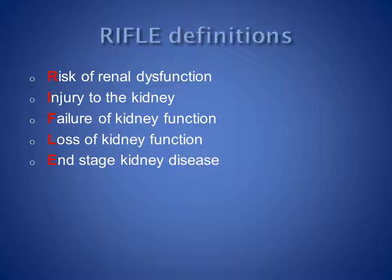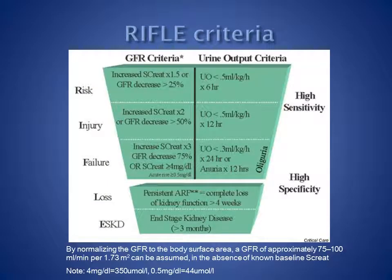Worsening RIFLE classification indicates reducing GFR. RIFLE class R, or risk of renal dysfunction, indicates a reduction in GFR of 25%. This is reflected clinically by a rise in serum creatinine of 50% above baseline, or urine output of less than 0.5 mL per kg per hour for 6 hours.